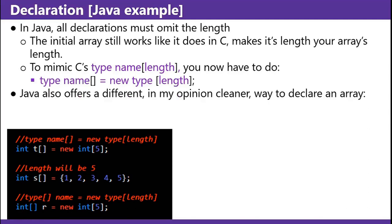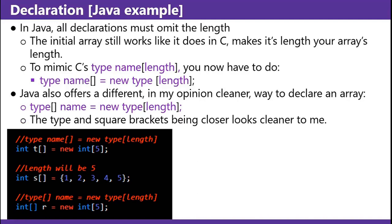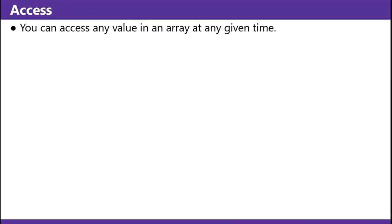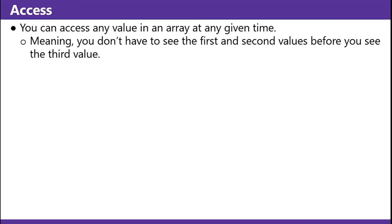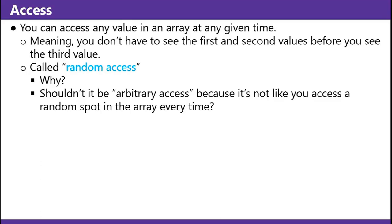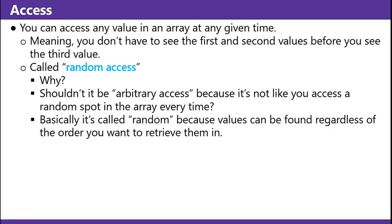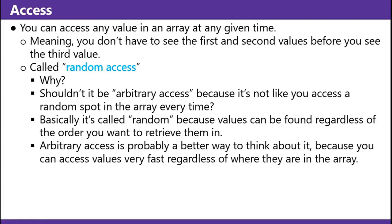Java also offers a different — in my opinion, cleaner — way to declare an array: 'type bracket name equals new type bracket length'. The type and square brackets being closer looks cleaner to me. Access: you can access any value in an array at any given time, meaning you don't have to see the first and second values before you see the third value. This is called random access. It's called random because values can be found regardless of the order you want to retrieve them in — arbitrary access is probably a better way to think about it.